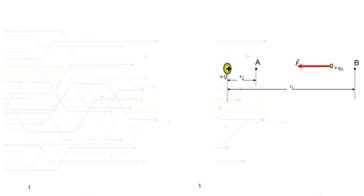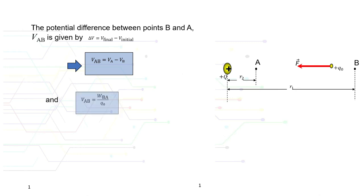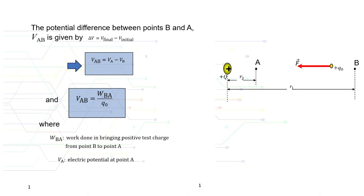The potential difference between points A and B can be expressed as Vab, given by ΔV = V_final − V_initial, or Vab = Va − Vb. We can also express the potential difference as Vab equals the work done to bring a test charge from B to A, W_ba, divided by q₀.